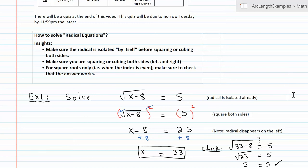So with the first example, as I can see the radical is already isolated, it's already by itself. So this gives me the green light to square both sides. Because the index is 2, I have to square both sides. And we saw that when you square a square root, the square root goes away.